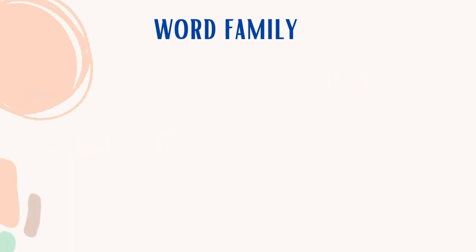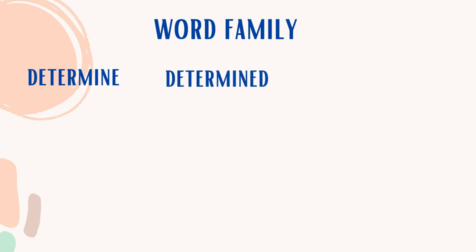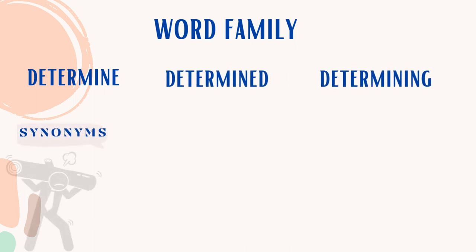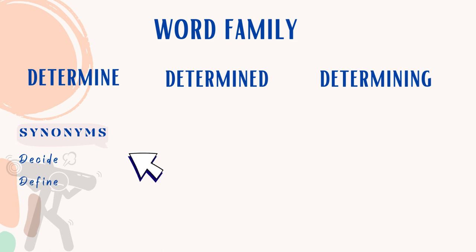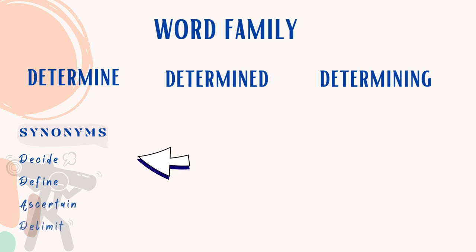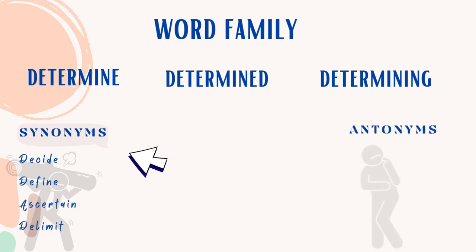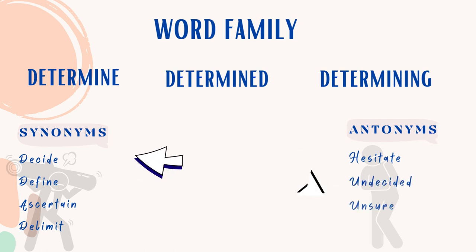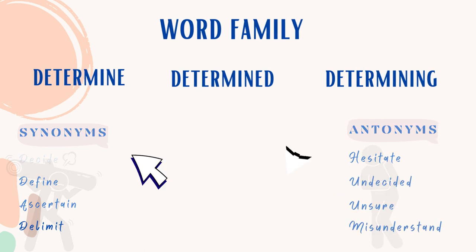Word family: Determine, Determined, Determining. Synonyms: Decide, Define, Ascertain, Delimit. Antonyms: Hesitate, Undecided, Unsure, Misunderstand.